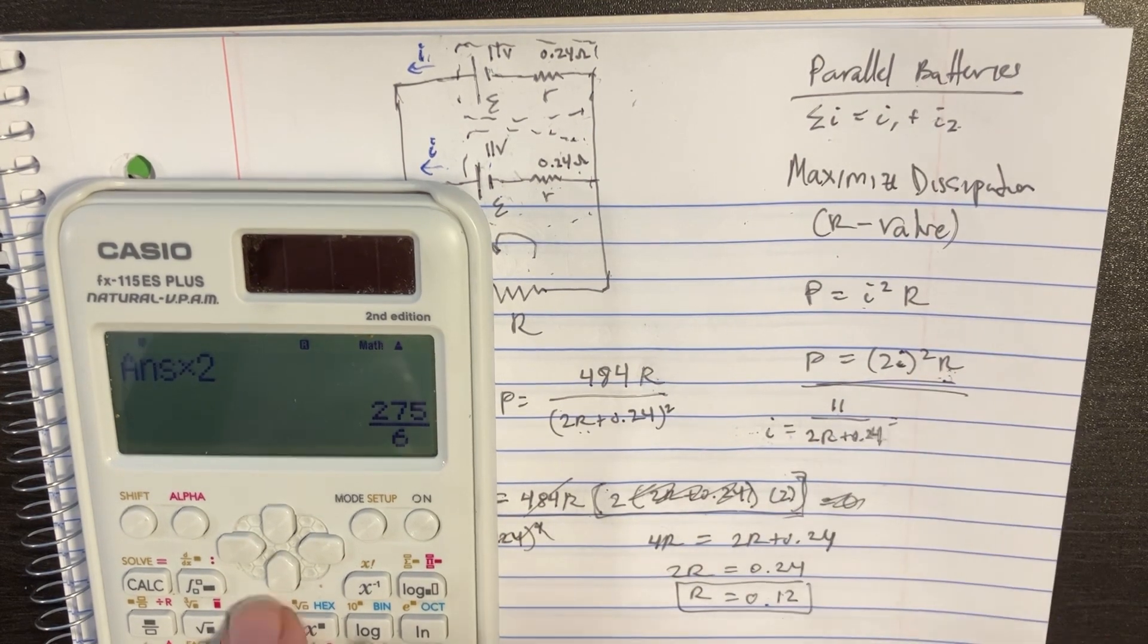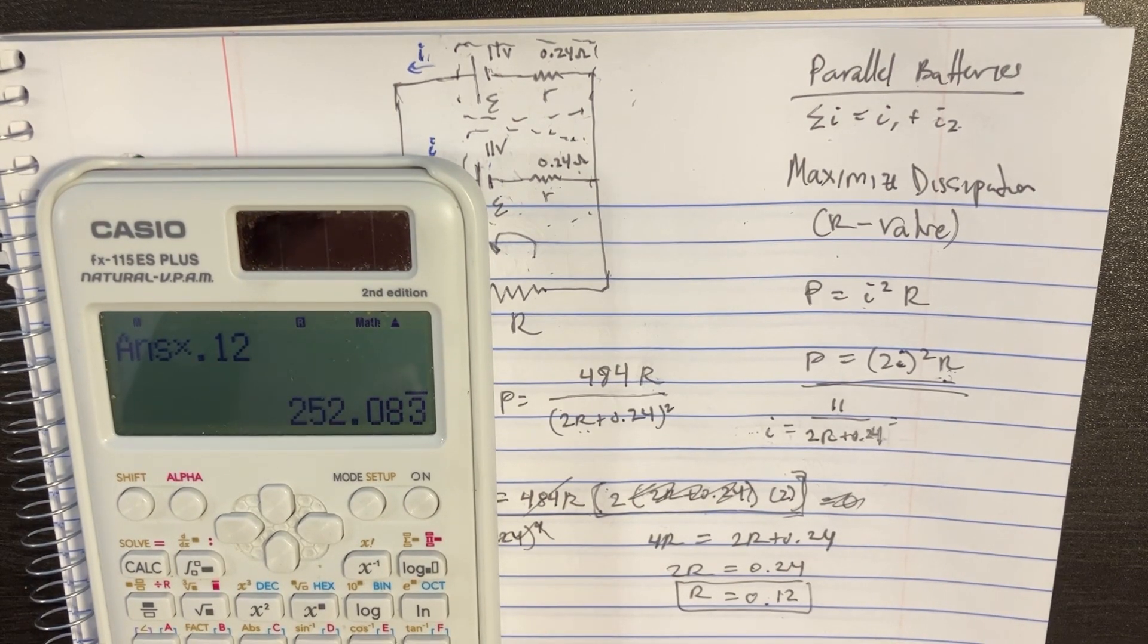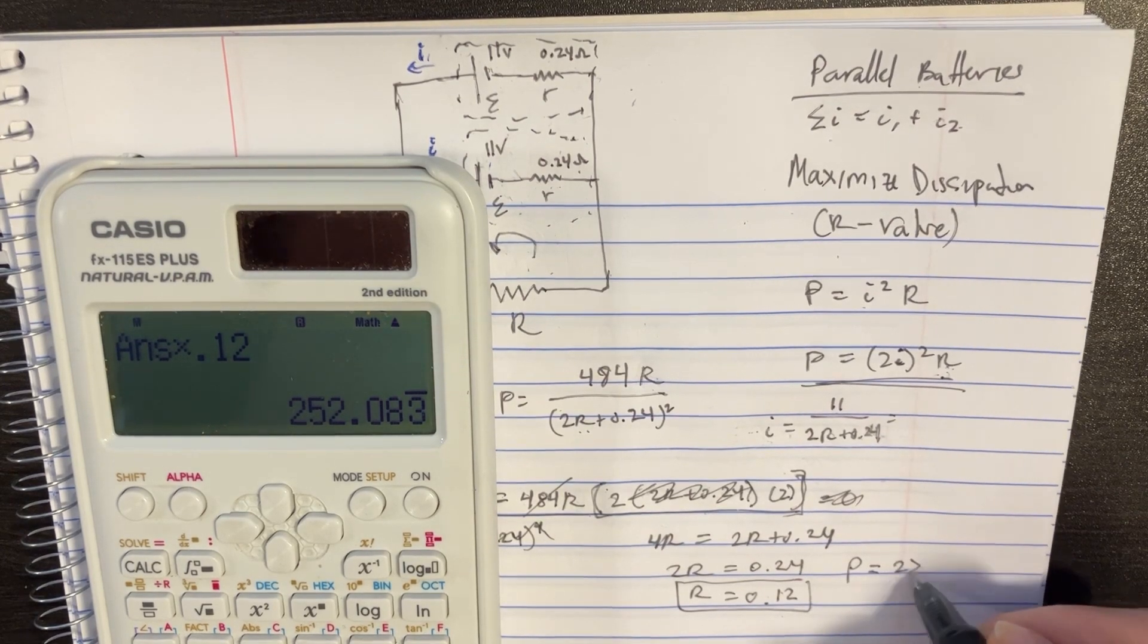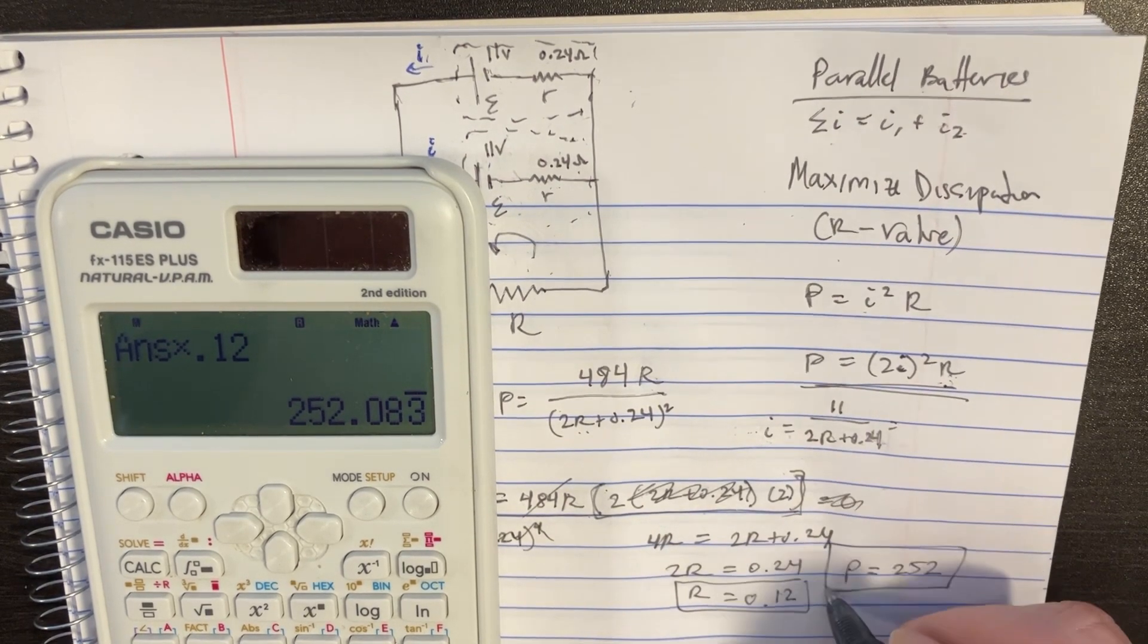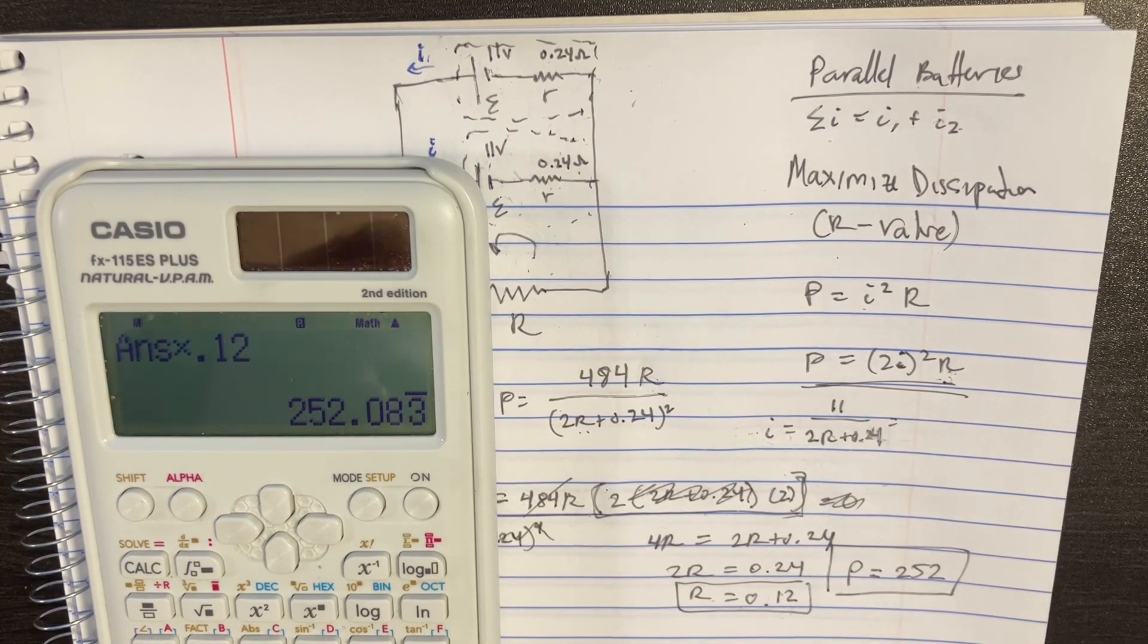And then we want to square it, and then we multiply that by 0.12. Bam! So we get that the maximum power is actually 252, and so now we've answered both questions: we got the r value and the maximum power dissipation.